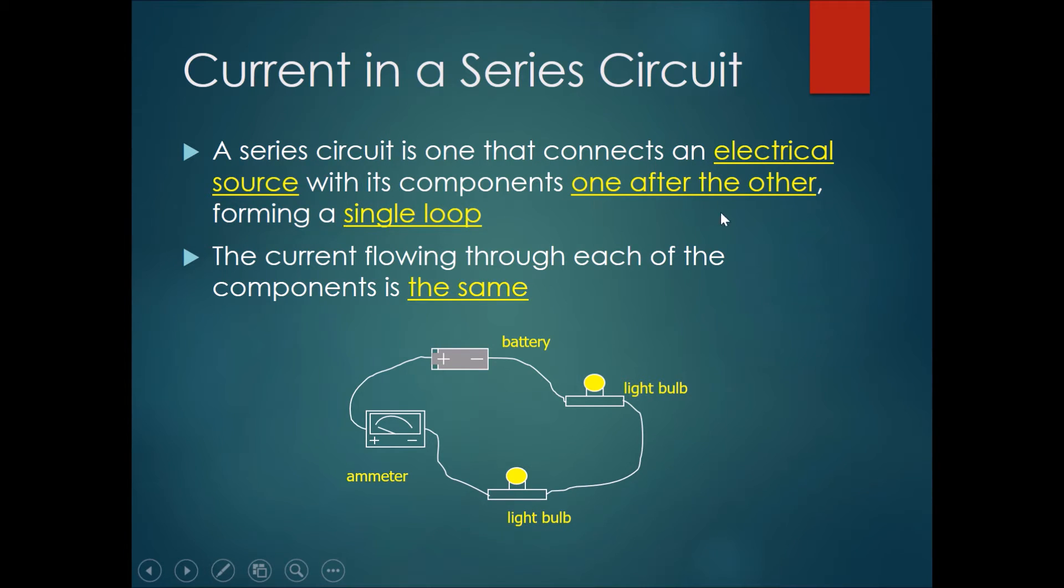with its components one after the other, forming a single loop. The current flowing through each of the components will be the same. So this means that if you measure the current at each part of the wire, they would all have the same current.